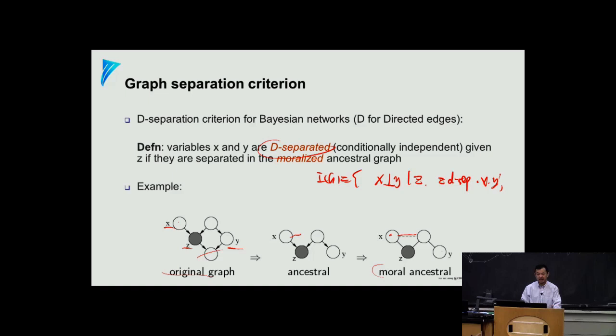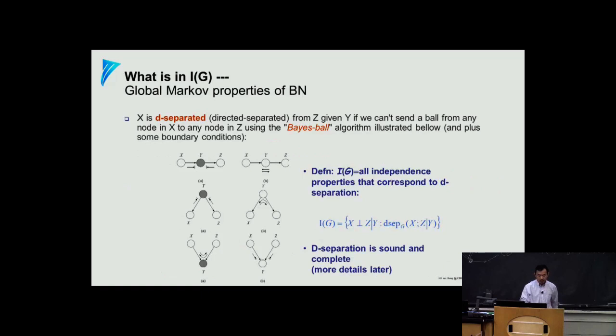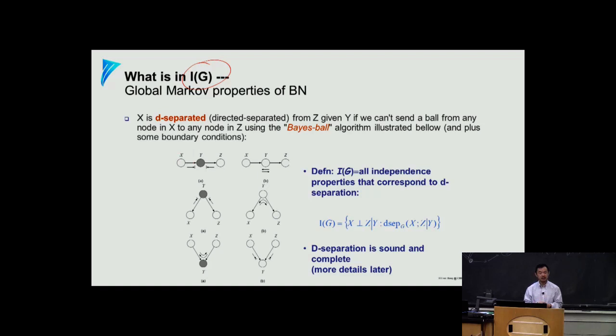There is another law called Bayes Ball, which also helps you get I(G), but because of time I'm going to skip that. You can read it from Michael Jordan's book or the TAs can explain it in recitation. It's an interesting thing — whether a ball from a source can be passed to a destination given some blocker in the middle, using three rules: passage through cascading, common parents, and shared children. We'll leave it as homework or an offline topic.